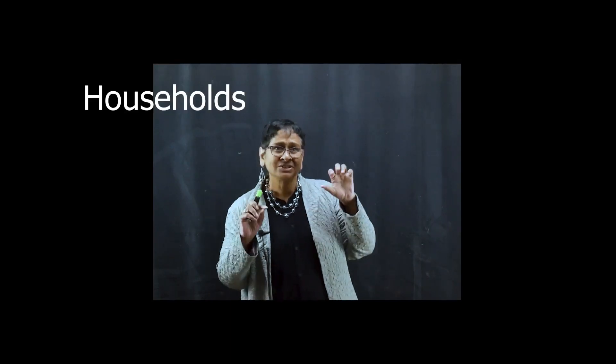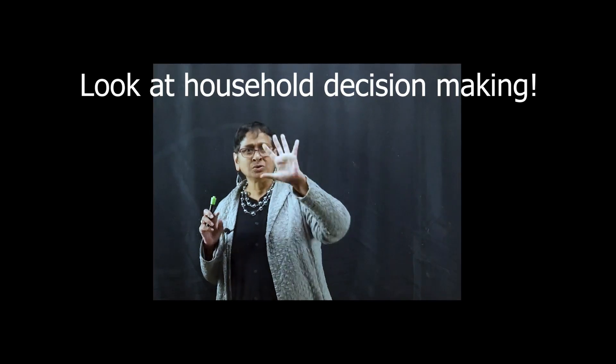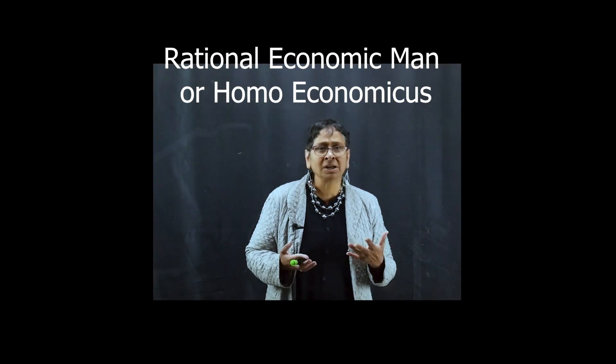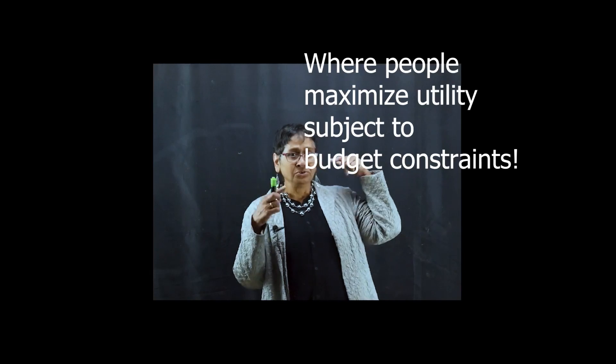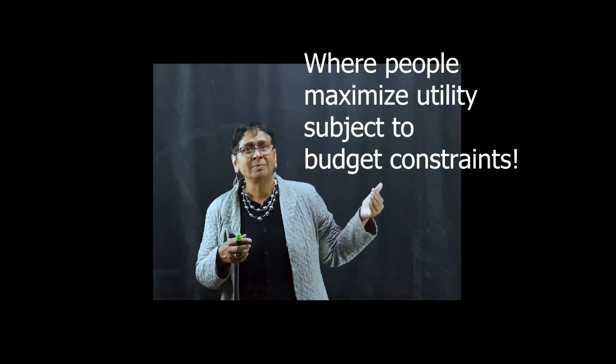We then realized that the circular flow is describing two major agents: households and firms. Our current effort is to look at households' decision making. When we look at households' decision making in the dominant model — not the only model — we move to the concept of rational economic man, or homo economicus.